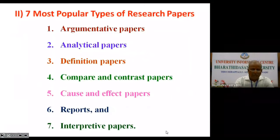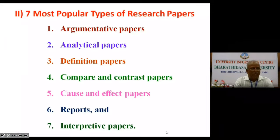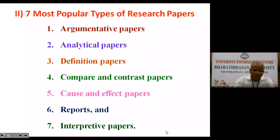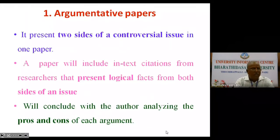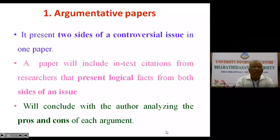According to my perception, there are seven types of research papers. That is: argumentative papers, analytical papers, definition papers, compare and contrast papers, cause and effect papers, reports, and interpretive papers. I don't want to take much of your time explaining each and every method, so I have given you some details that you can refer to later.